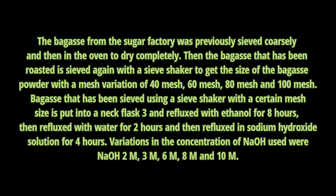The bagasse from the sugar factory was previously sieved coarsely and then placed in an oven to dry completely. Then the dried bagasse is sieved again with a sieve shaker to obtain bagasse powder in mesh variations of 40 mesh, 60 mesh, 80 mesh, and 100 mesh. The sieved bagasse is then put into a three-neck flask.